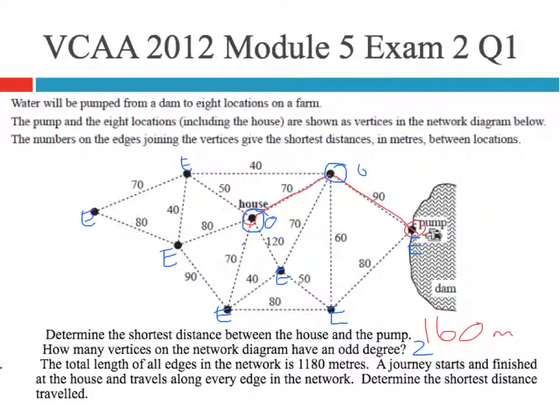So the total length of all of the edges, so they're telling you all of the edges added together, is 1,180 metres. A journey starts and finishes at the house, travelling along every edge in the network to determine the shortest distance. The house is an odd vertex, so we know we can get an Euler path that starts at the house, but that means it's going to finish at this second odd vertices at the top here. So if we have to finish at the house, that means I'm going to have to go over another edge more than once to end up back at the house. And obviously the shortest way of doing that to get from this odd vertices back to the house is travelling along that edge of 70. So that means that our total distance will be the 1,180 plus 70. So in total, our distance will be 1,250 metres.